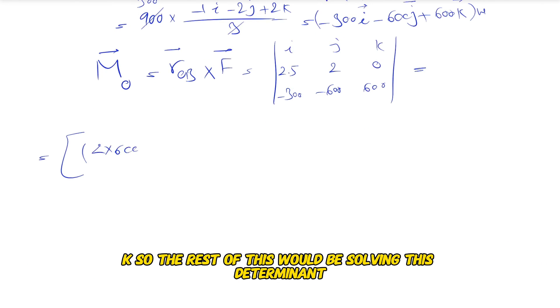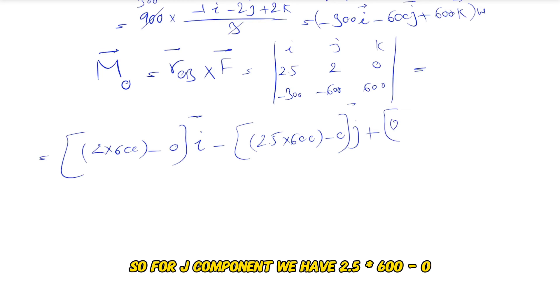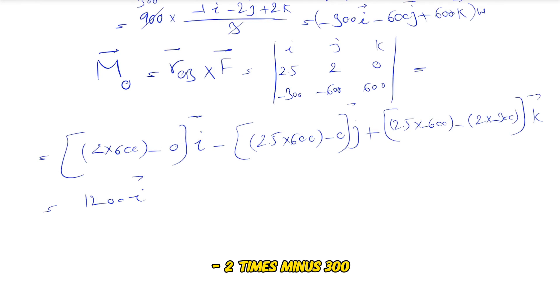The rest is solving this determinant. For the i component we have 2 times 600 minus 0, which gives us 1200i. For the j component, we have 2.5 times 600 minus 0...